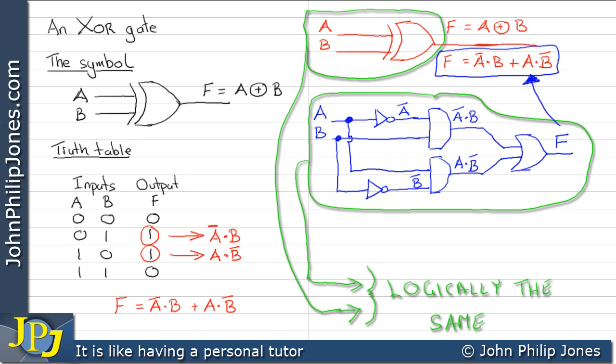It's just the case that we can take the sum of min terms from the truth table and get this combinational logic circuit instead of the gate.